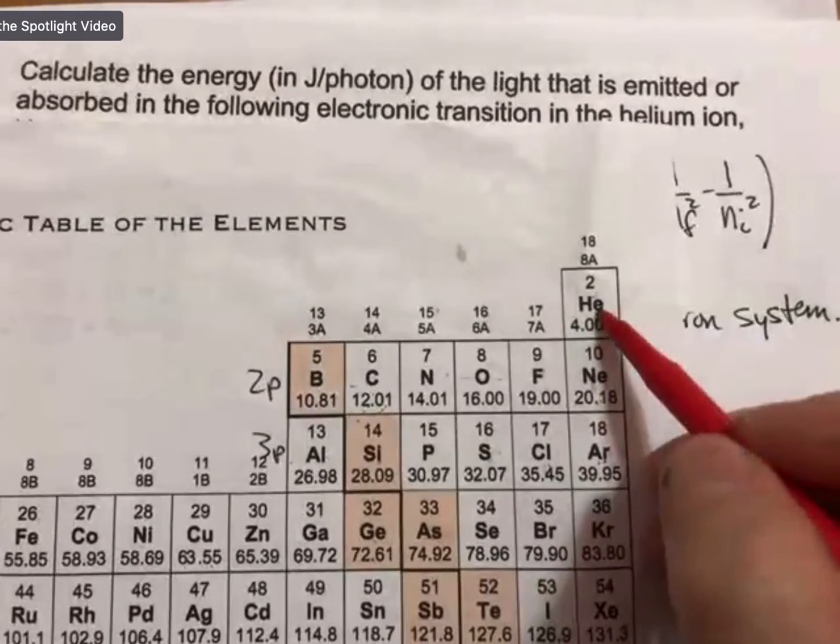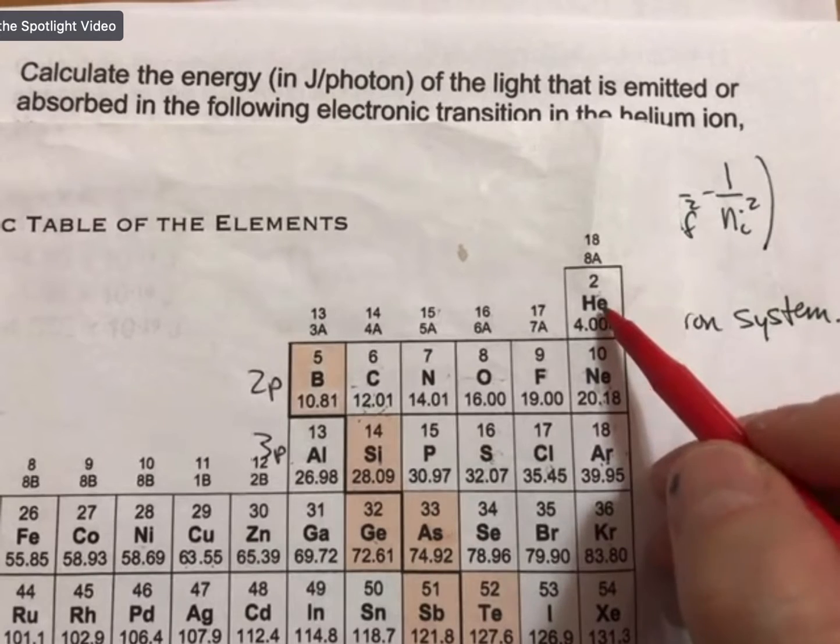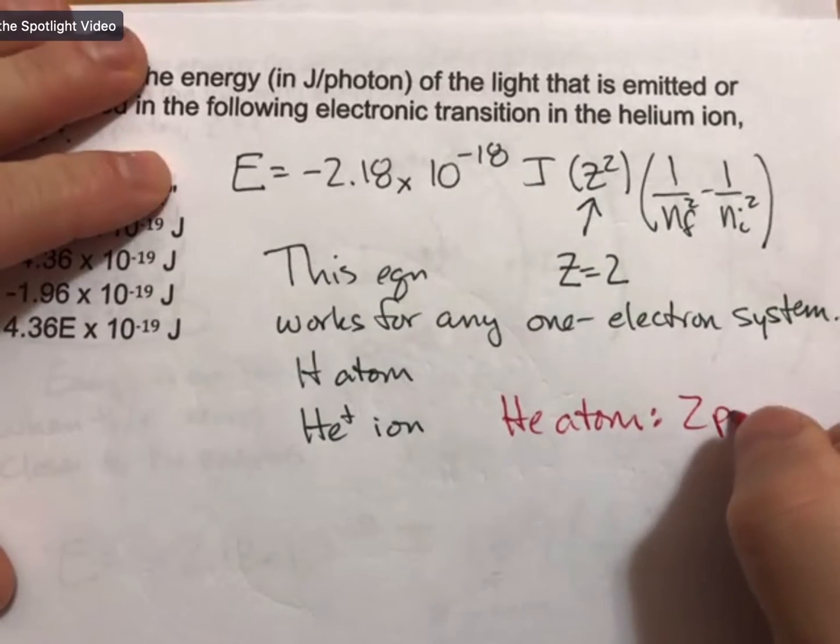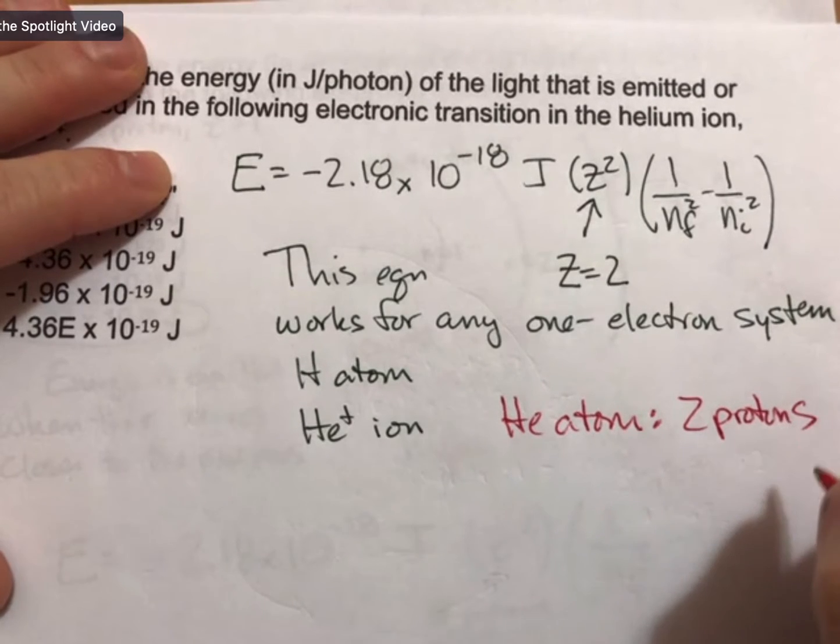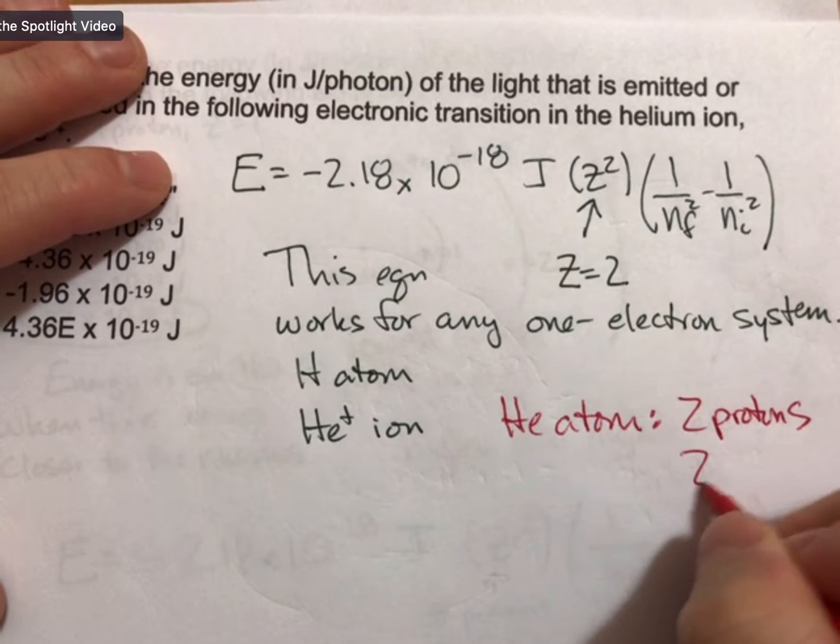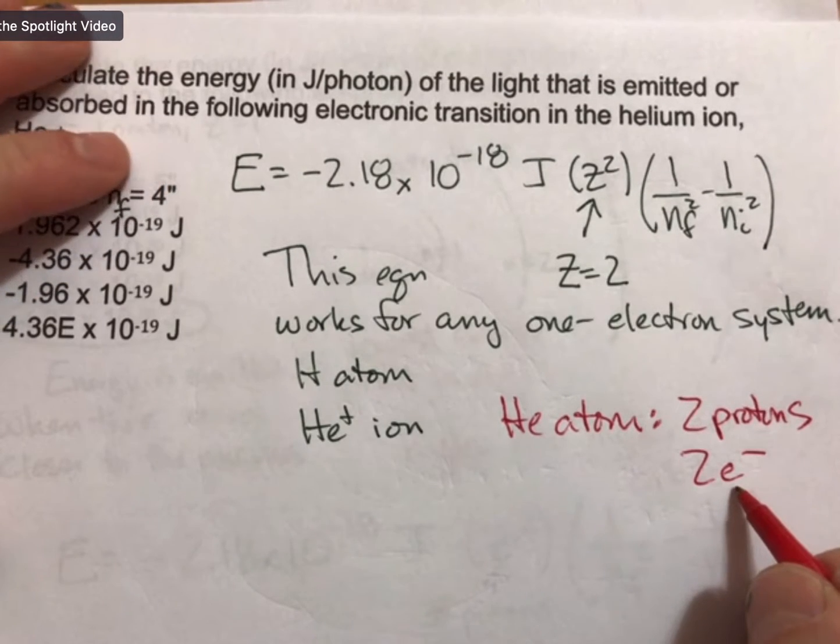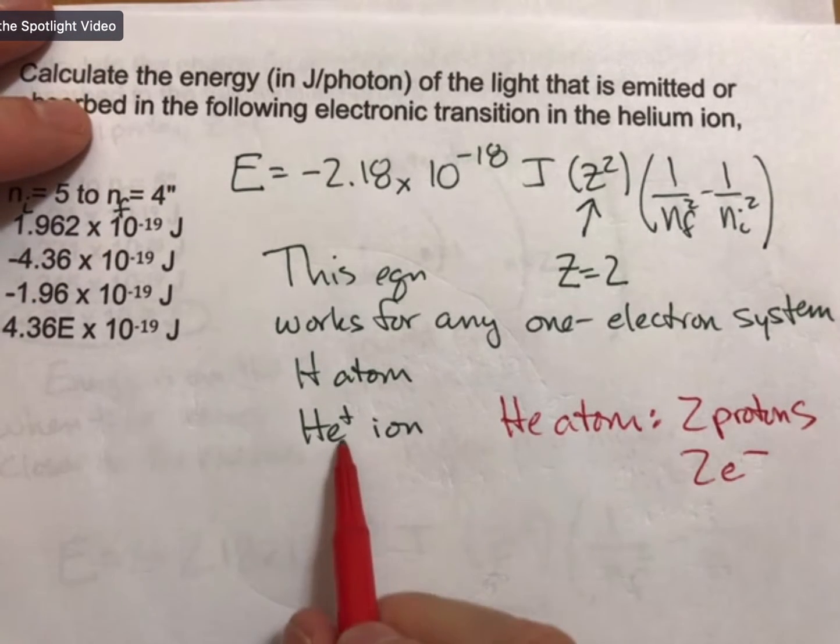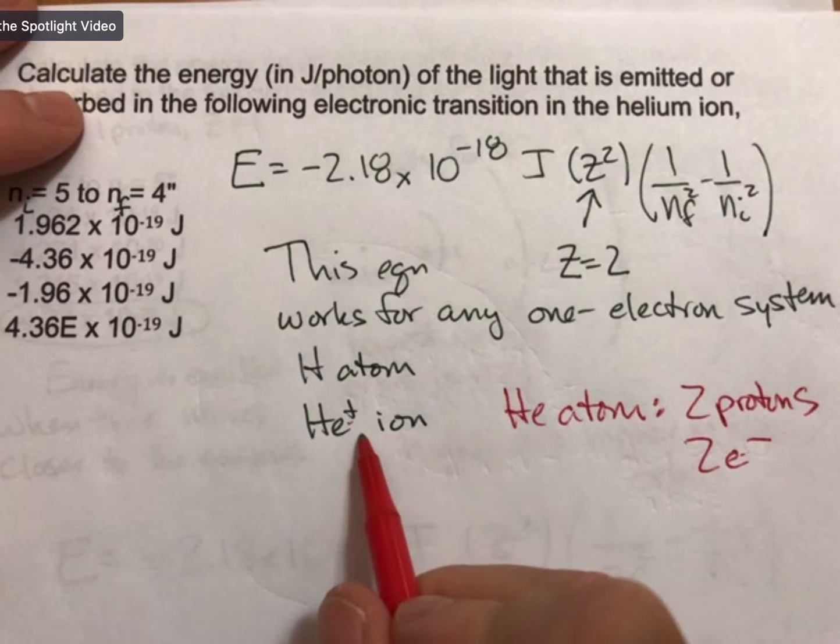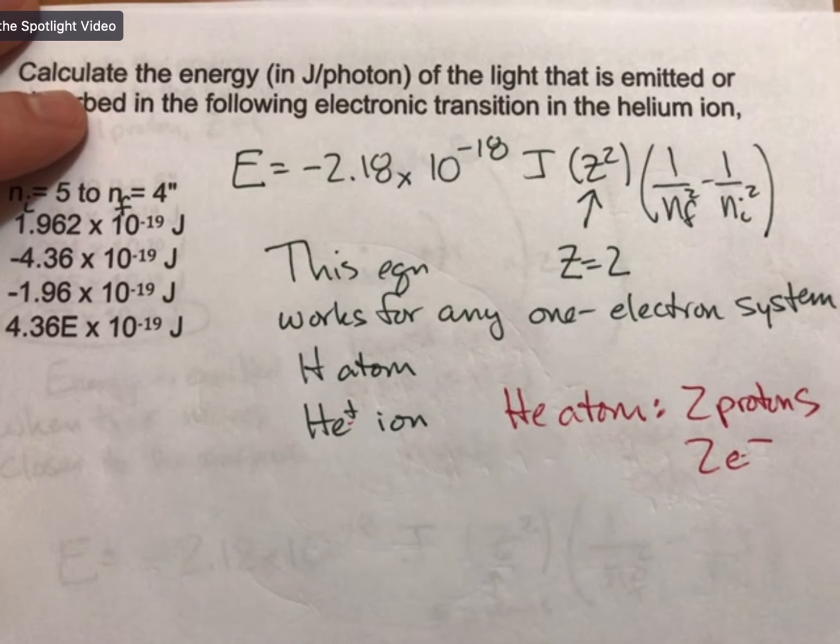And atoms have the same number of protons and electrons, so it has two electrons. If it becomes a plus one ion, it becomes a plus one ion by losing one electron. And so, helium plus has one electron.